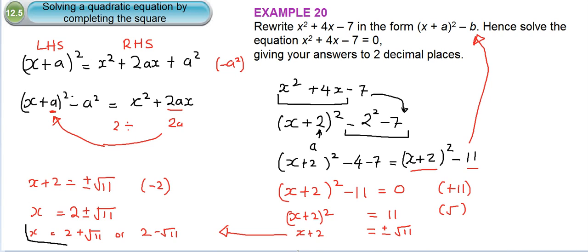Those are our two solutions. You can now either leave that in surd form, or you can go ahead and do the square root of 11 and add it to negative 2, or do the square root of 11 and take it away from negative 2.